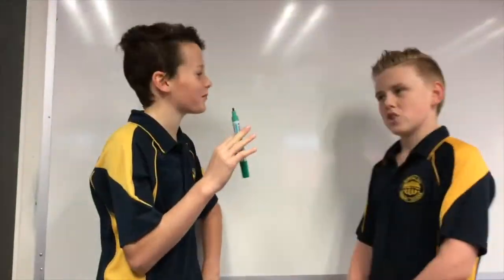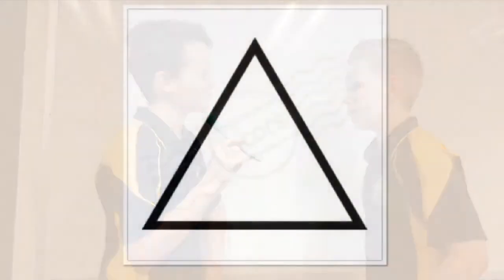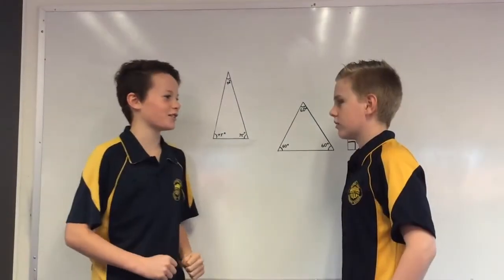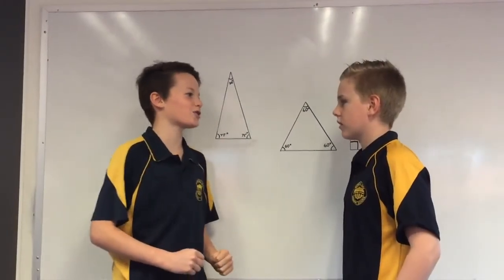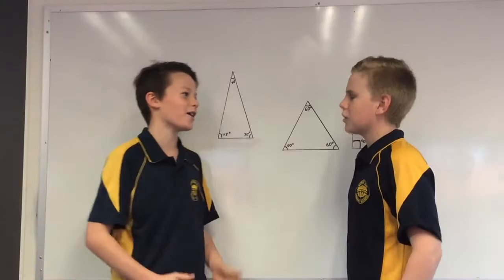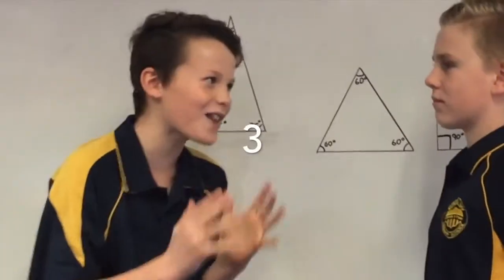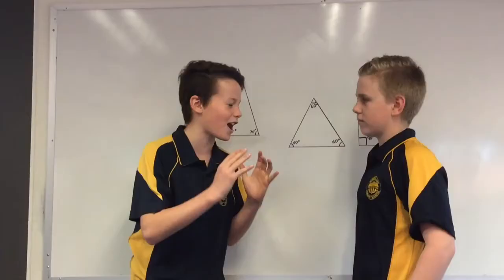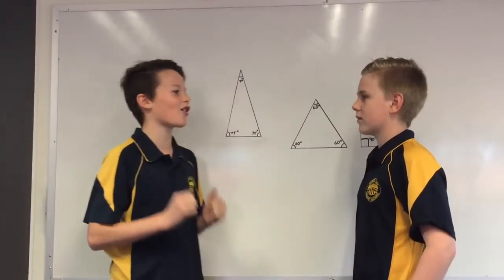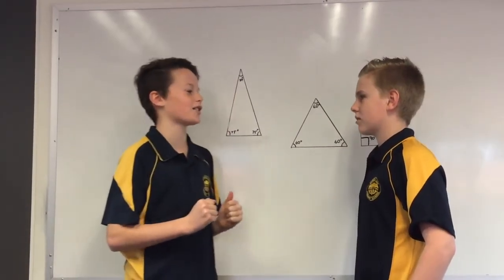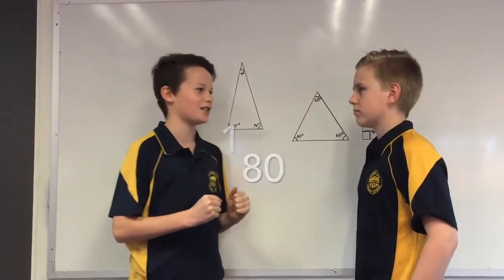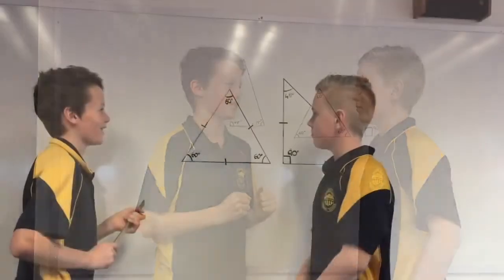So, Professor Martial, what exactly is a triangle? Well, you see, Assistant Finnegan, a triangle is a three-edge shape with three vertices and three angles that always add up to 180 degrees.